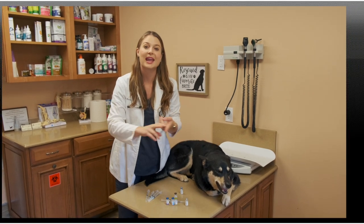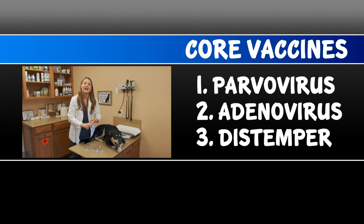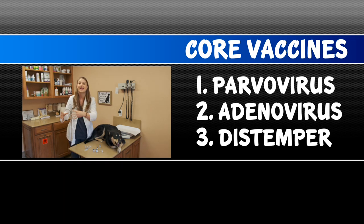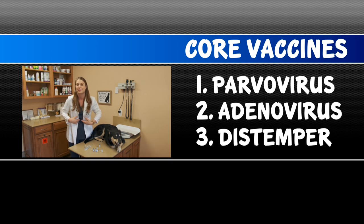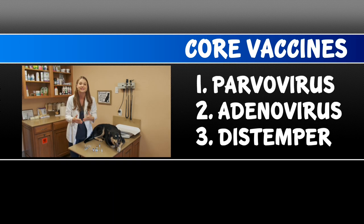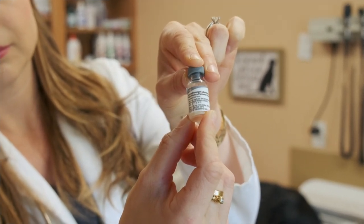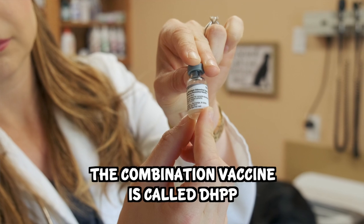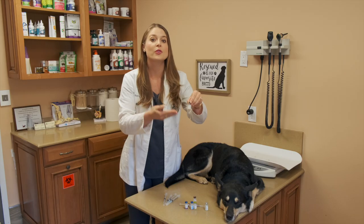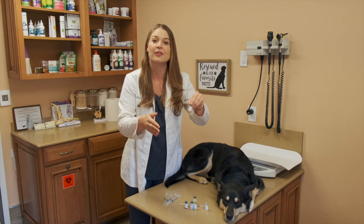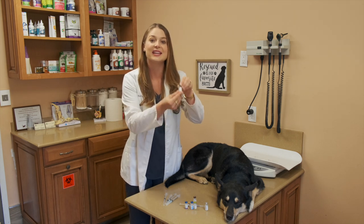The four core vaccines are canine parvovirus, canine adenovirus type 2, which cross-protects against canine adenovirus type 1 that causes canine hepatitis, and canine distemper virus. This vaccine comes in a combo called DHPP, which your veterinarian will give to your dog starting when they're a puppy at six weeks, eight weeks, and every month after that through their puppy series, and then yearly.